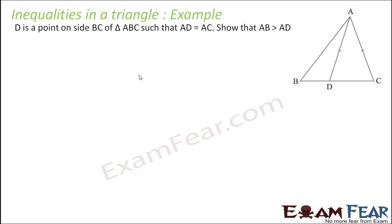Now consider: D is a point on side BC of triangle ABC such that AD is equal to AC. We have to prove that AB is greater than AC.